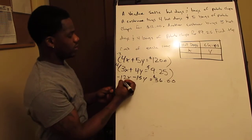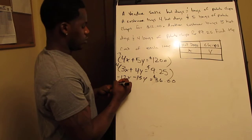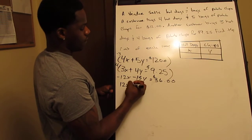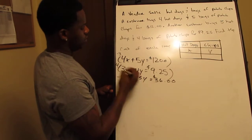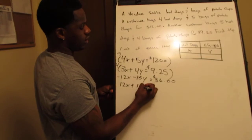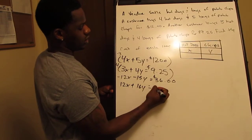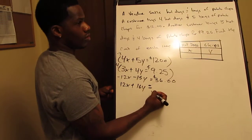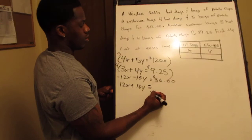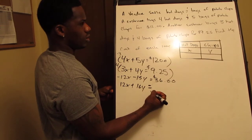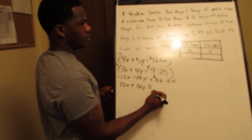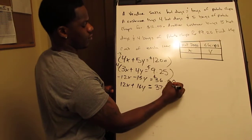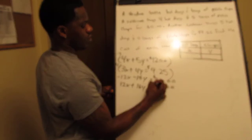Then we multiply the second equation by four: four times 3 is 12X, and four times 4Y is 16Y. That equals four times $9.25, which is $37. So the second equation becomes 12X plus 16Y equals $37.